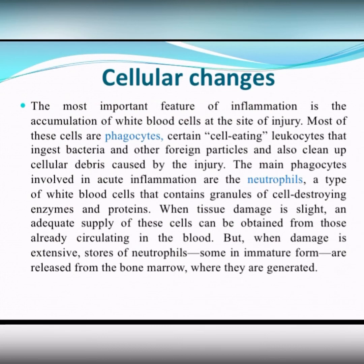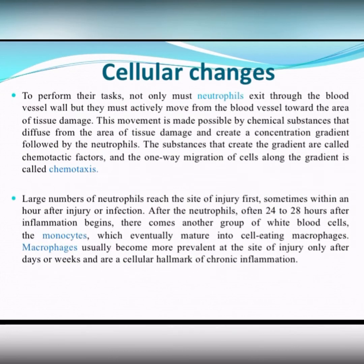Neutrophils are the first and fastest cells which move to the inflammation area. When tissue damage is slight, an adequate supply of these cells can be obtained from those already circulating in the blood. But when damage is extensive, stores of neutrophils, some in immature form, are released from the bone marrow where they are generated. Large numbers of neutrophils reach the site of injury fast, sometimes within an hour after injury or infection.